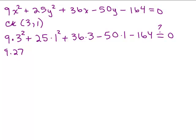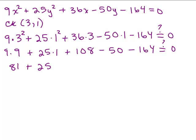So we have 9 times 27 plus 25 times, I'm sorry that's not 9 times 27, I'm ahead of myself here, 9 times 9 and 25 times 1. 36 times 3 I think is 108 minus 50 and minus 164, so we have 81 plus 25 plus 108 minus, let's do this, we have a negative 50 and a negative 164,